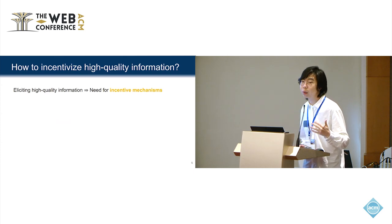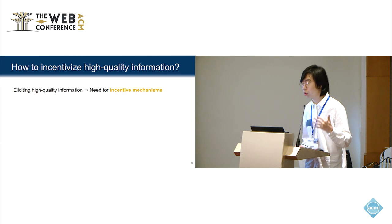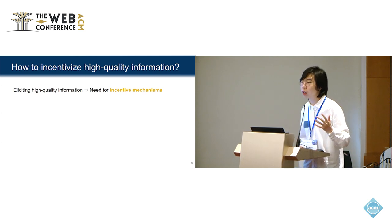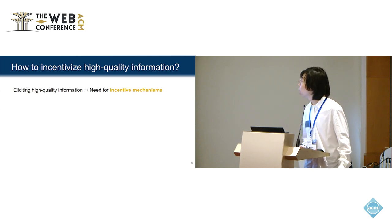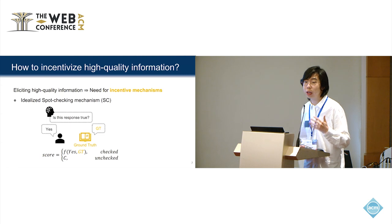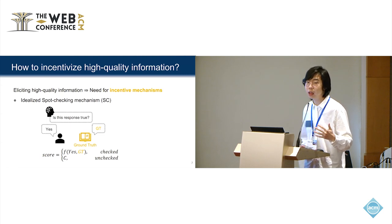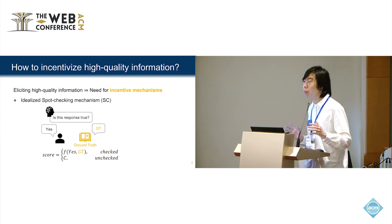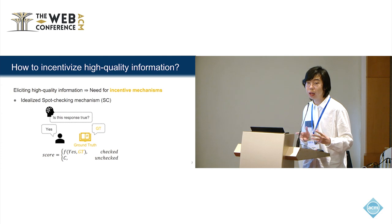Typically, there's a need for incentivized mechanisms which pay the agents according to their report quality. Imagine if you are a principal running some crowdsourcing system, which mechanism should you use? A very straightforward idea is to use the spot-checking mechanism. It randomly checks a fraction of the tasks. Ideally, we can compare the agent's report with the ground truth and pay agents according to that comparison. For the unchecked tasks, we just apply a constant payoff.